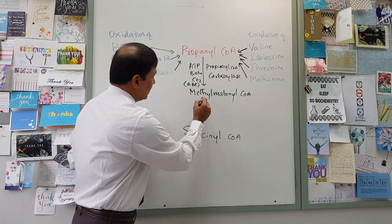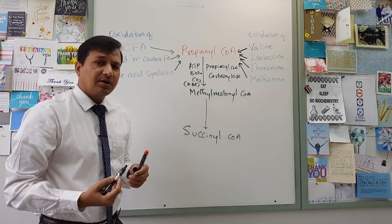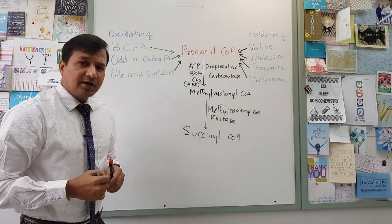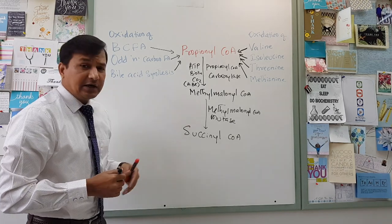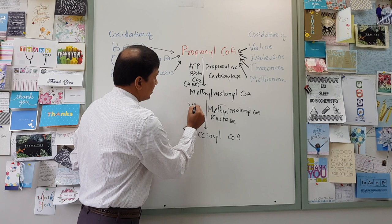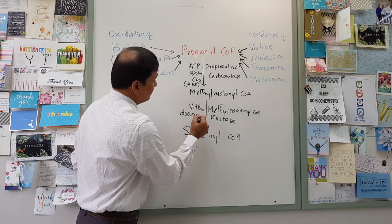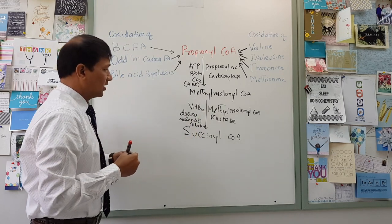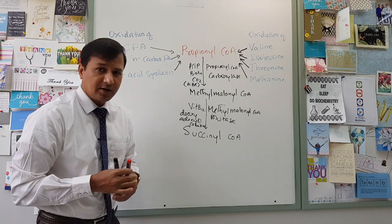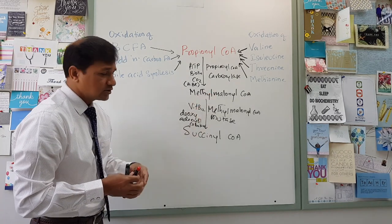Methylmalonyl-CoA will then be converted into succinyl-CoA, and this is done by the methylmalonyl-CoA mutase enzyme. The methylmalonyl-CoA mutase enzyme needs vitamin B12 — specifically deoxyadenosylcobalamin, which is the form of vitamin B12 that acts as the coenzyme for this enzyme — to convert methylmalonyl-CoA into succinyl-CoA.